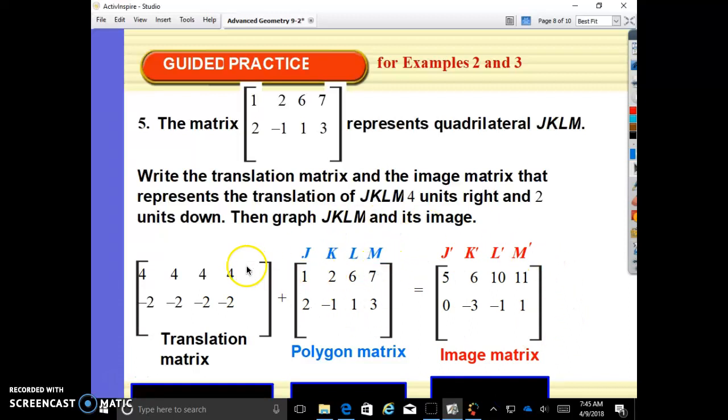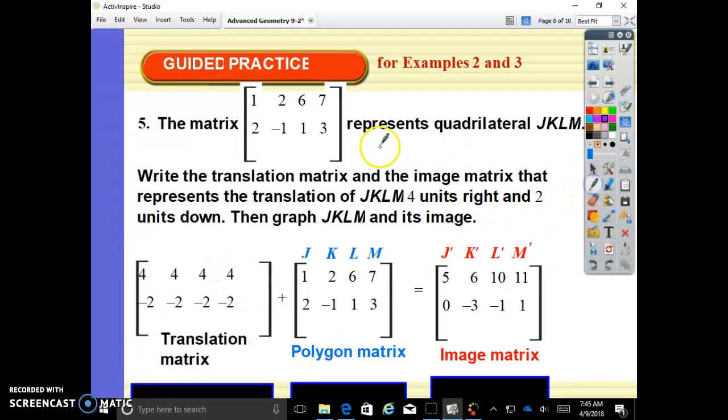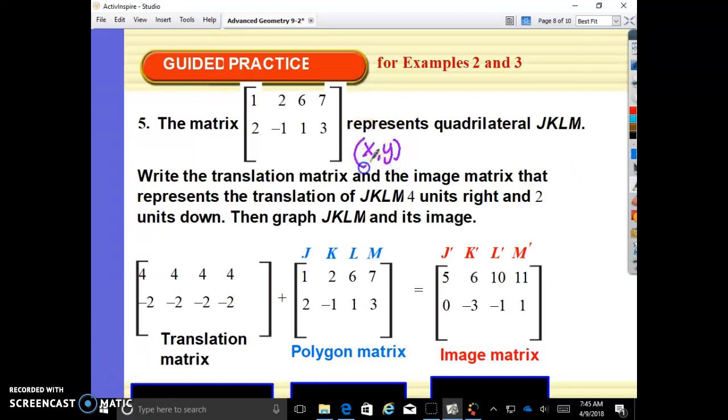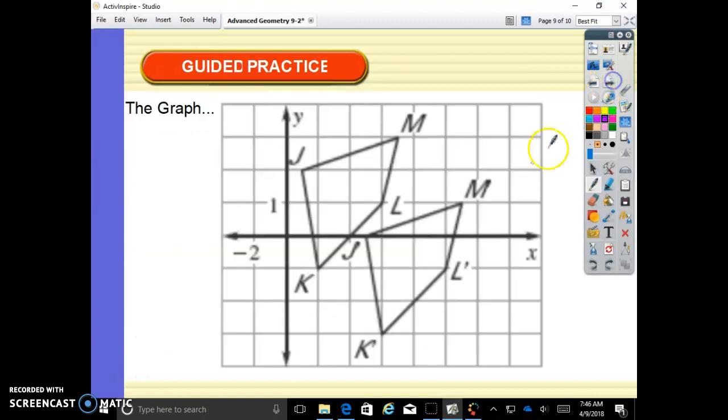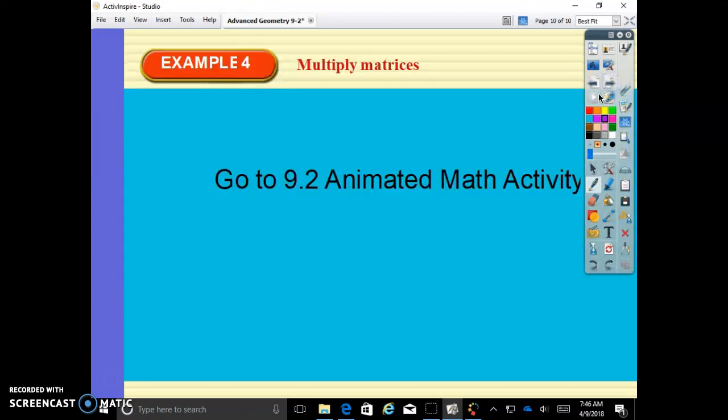So this is your pre-image. This is your translation matrix. And here is your image. It has this nice little primes to say, I am the image after this rule was applied. Do you guys remember how we used to write these rules? It used to be x comma y becomes x plus four comma y minus two. This is a rule. This is the same thing as this. It's the rule written in a matrix. And then you graph them. Here is your original. Here is your image. How do I know? Because it has the apostrophes.